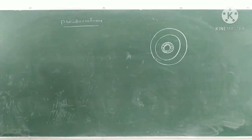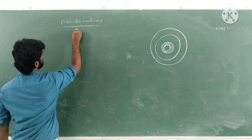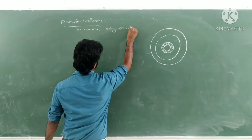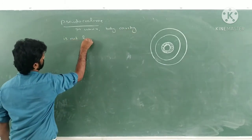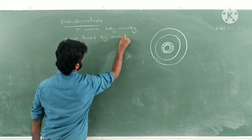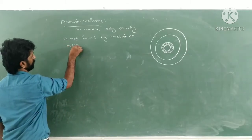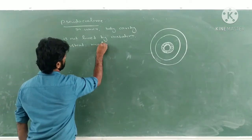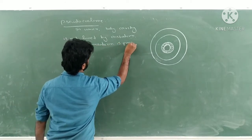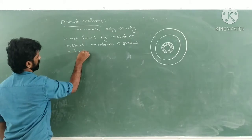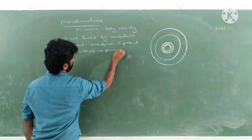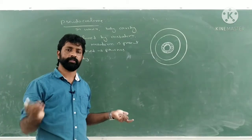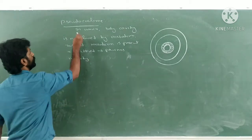The next type is pseudocoelom. In pseudocoelom, the body cavity is not lined by mesoderm. Instead, the mesoderm is present scattered as pouches in the body cavity. Such a coelom is called pseudocoelom — a false true body cavity.